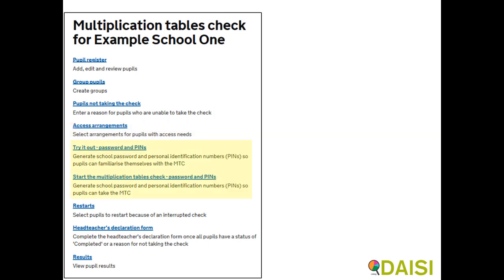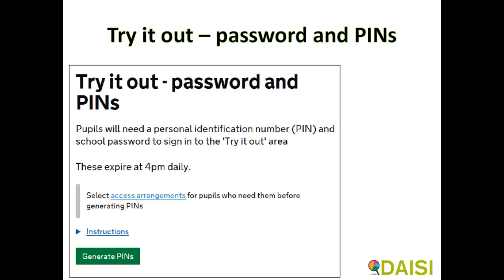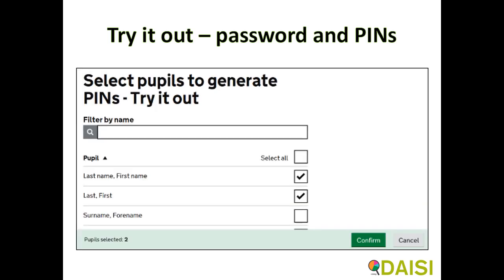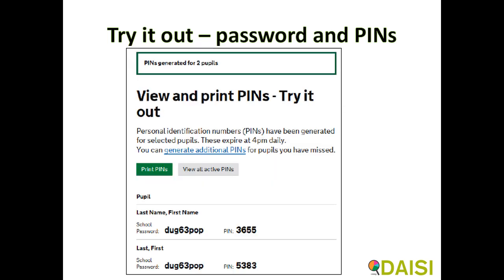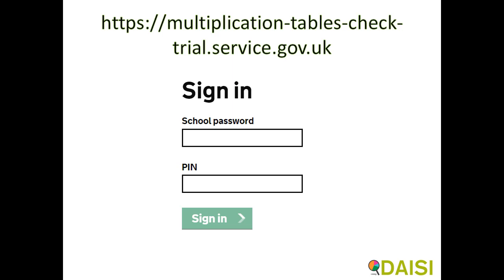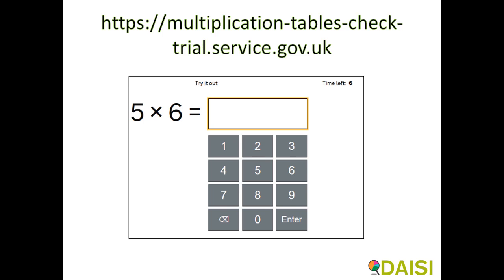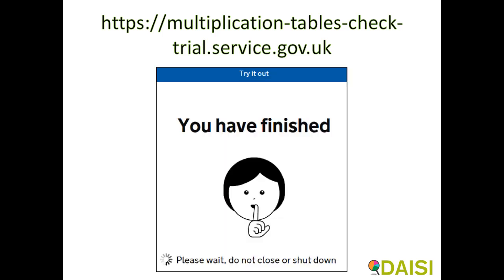The try it out area opened on Monday the 1st of April. It consists of 25 questions after three practice questions have been shown. Pupils will need a PIN which will expire at 4pm, and their school password. To try it out or eventually to take the full test, go to https://multiplication-tables-check-trial.service.gov.uk. There are three practice questions followed by 25 times tables questions, with six seconds per question and a three-second pause between each. Once a pupil has completed the test, don't close the window until you see another window saying thank you. They can optionally leave feedback.